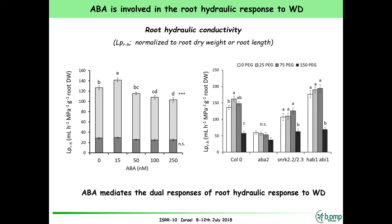We did the same with ABA treatment. ABA is able to stimulate the aquaporin-dependent part of root hydraulic conductivity. With ABA mutants, the ABA-deficient mutants are not able to stimulate root hydraulic conductivity when we apply PEG. The hypersensitive mutant already has much higher water conductivity, and it cannot be further stimulated — it is only repressed at much higher concentrations.